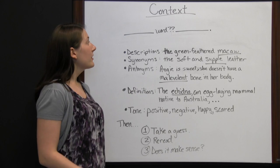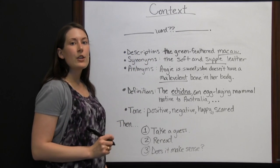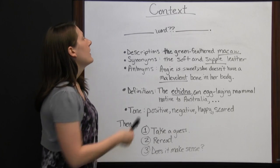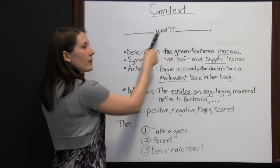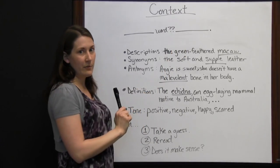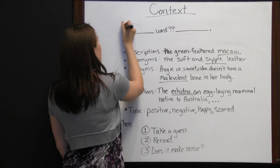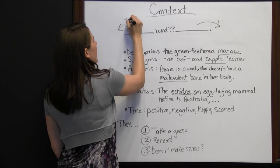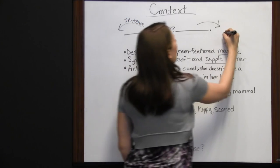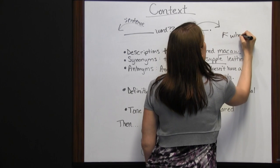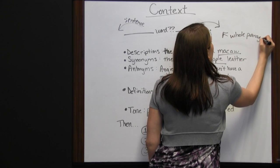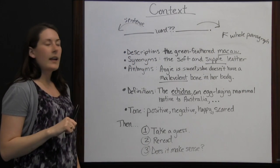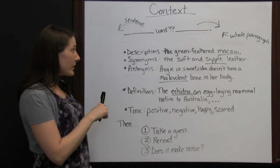Context clues. Sometimes when you're reading and you come across a word that you don't know, you can use context clues to make an educated guess as to what the word means. When you're looking at the word you don't know, you don't want to just look right before and after the word. You usually want to look at the sentence before and the sentence after, and sometimes you even have to look at the whole paragraph to get an idea of what that unfamiliar word means. There are some clues we can look at to help determine what the word means.